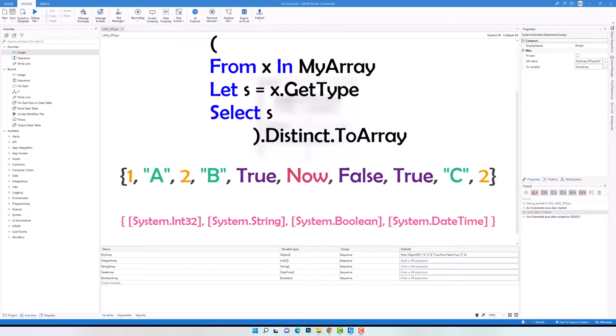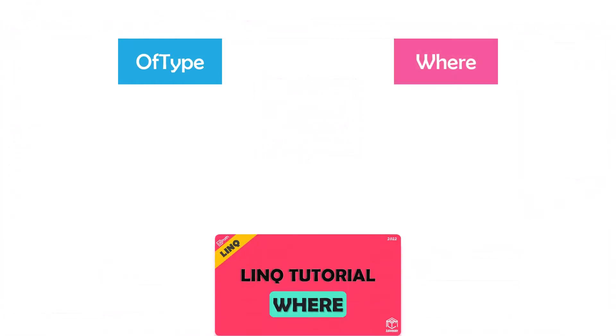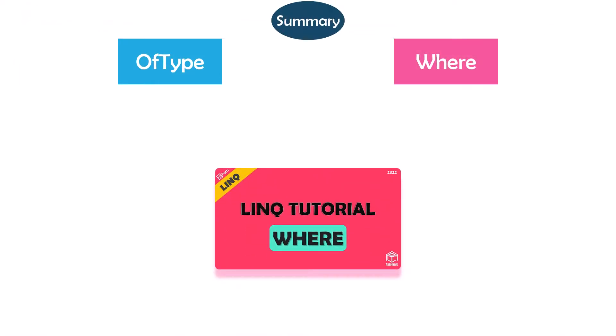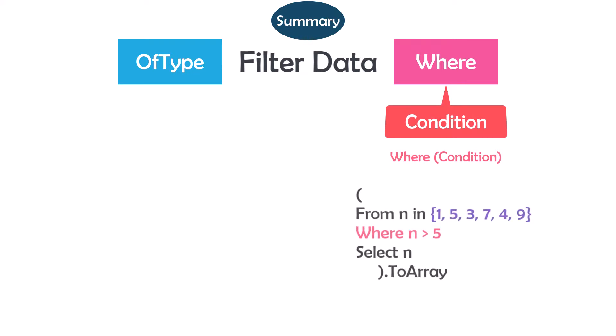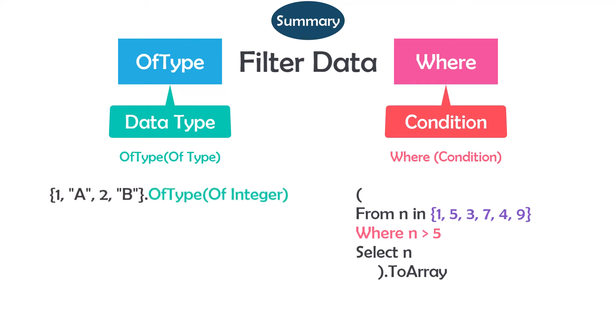Before ending this video, let me show you the difference between the OfType operator and the WHERE operator. I already covered the WHERE operator in another video — please check that if you want to learn more. Both operators filter data: WHERE filters using a condition, for example getting numbers greater than five from an integer array. OfType filters depending on the data type — for example, getting only integer numbers from a sequence that contains different data types. Depending on your need, you can use either WHERE or OfType.